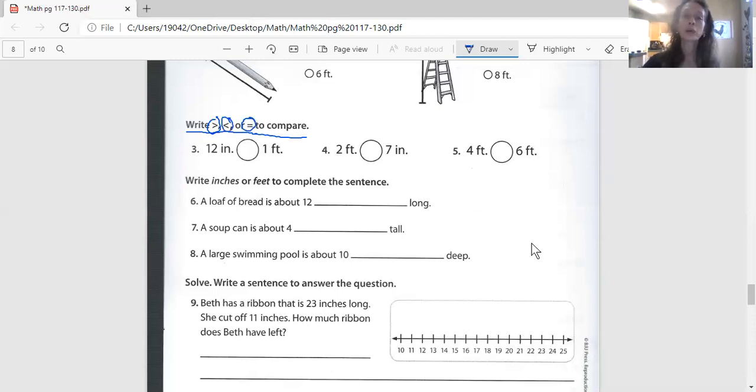And now this next one says two feet, which is two of these, versus seven inches, which is probably about that long, which is bigger. Two feet or seven inches. And the next one wants to know which is longer. Six feet. I'm sorry, four feet or six feet. That's an easy one. Four of these, or six of these, which is longer.